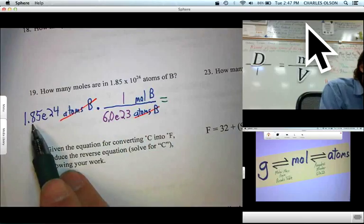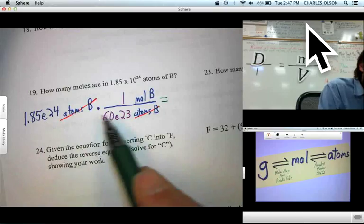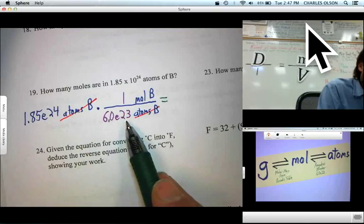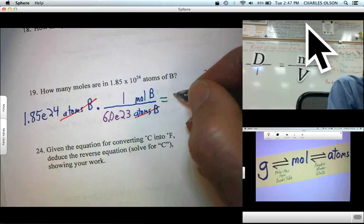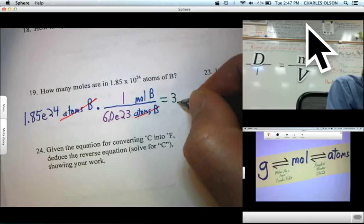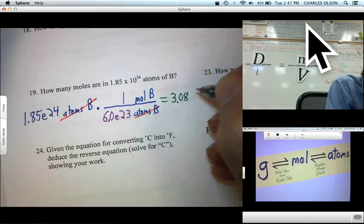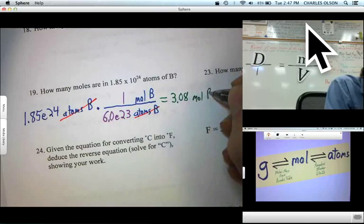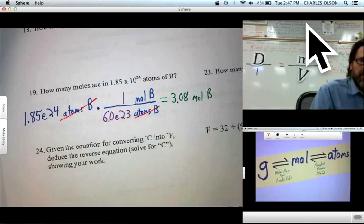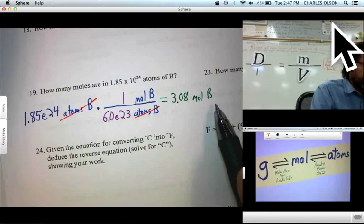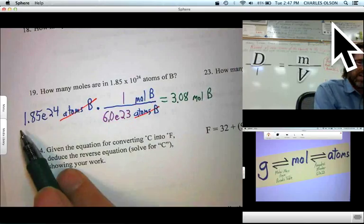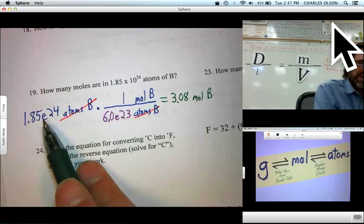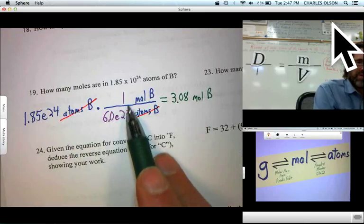1.85 times 10 to the 24th divided by 6 times 10 to the 23rd equals to 3 sig figs, 3.08 moles of boron. So, there we go. There is our answer. We do 3 sig figs because our input number was 3 sig figs and conversion factors don't affect sig figs.